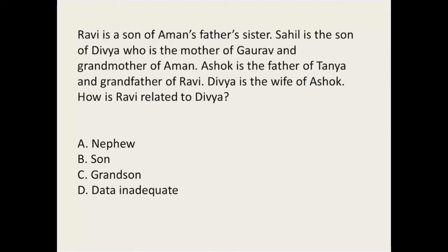Another question: Ravi's son — this is a very good question. Make a family chart and you'll get the correct answer. The right answer is C — grandson. Make the chart carefully and you'll arrive at grandson as the answer.